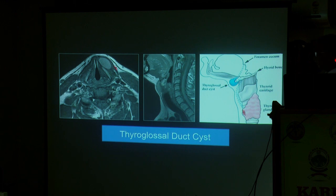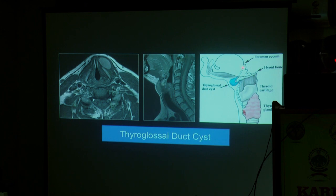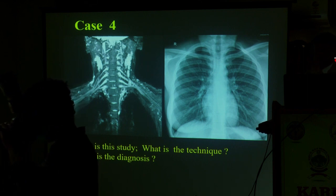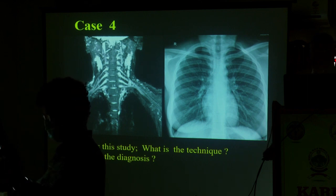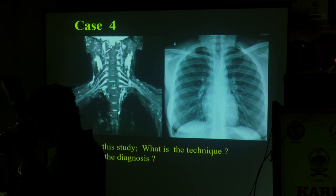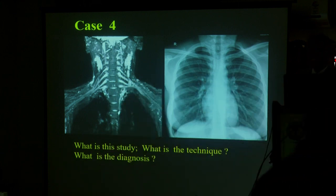A thyroglossal cyst can occur anywhere — midline or slightly off midline, because the thyroglossal tract sometimes runs along an off-midline pathway. From a cyst it can become a sinus, or it may be complicated in any format. You may get different types of cases. This case will definitely not appear in your exam — even though I am setting the questions, I will not set this specific case. Don't take photographs — it is a waste for you.